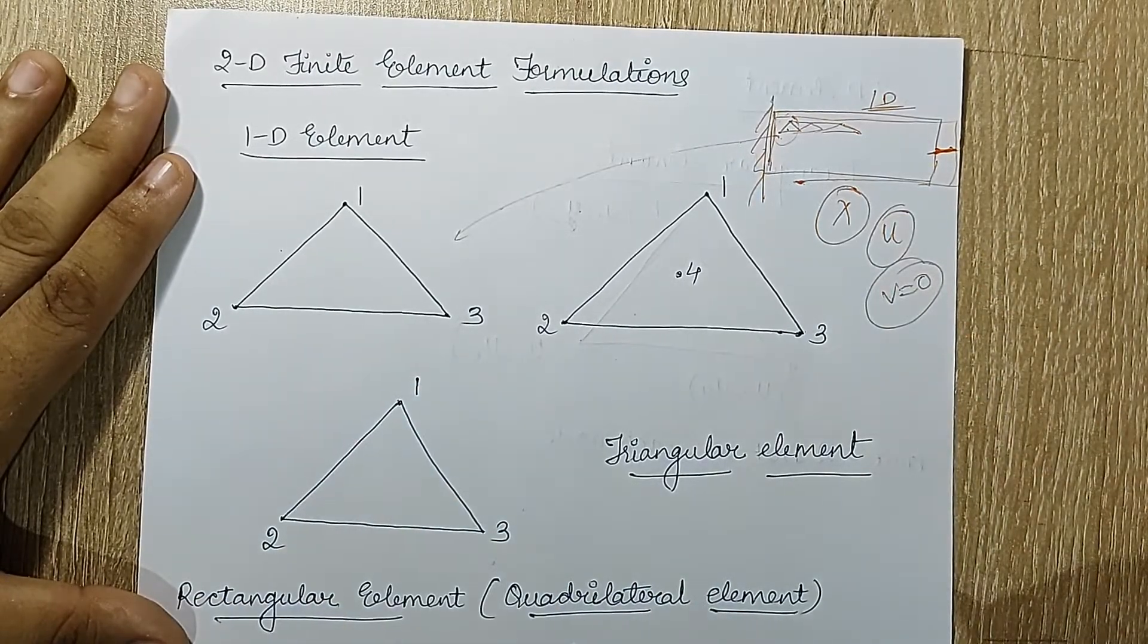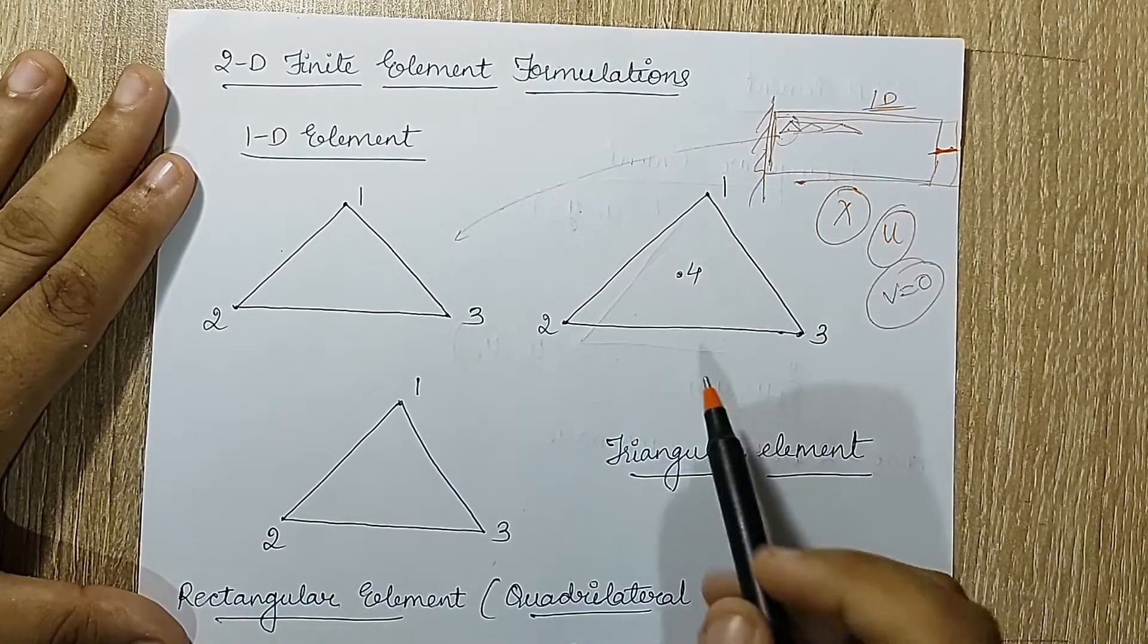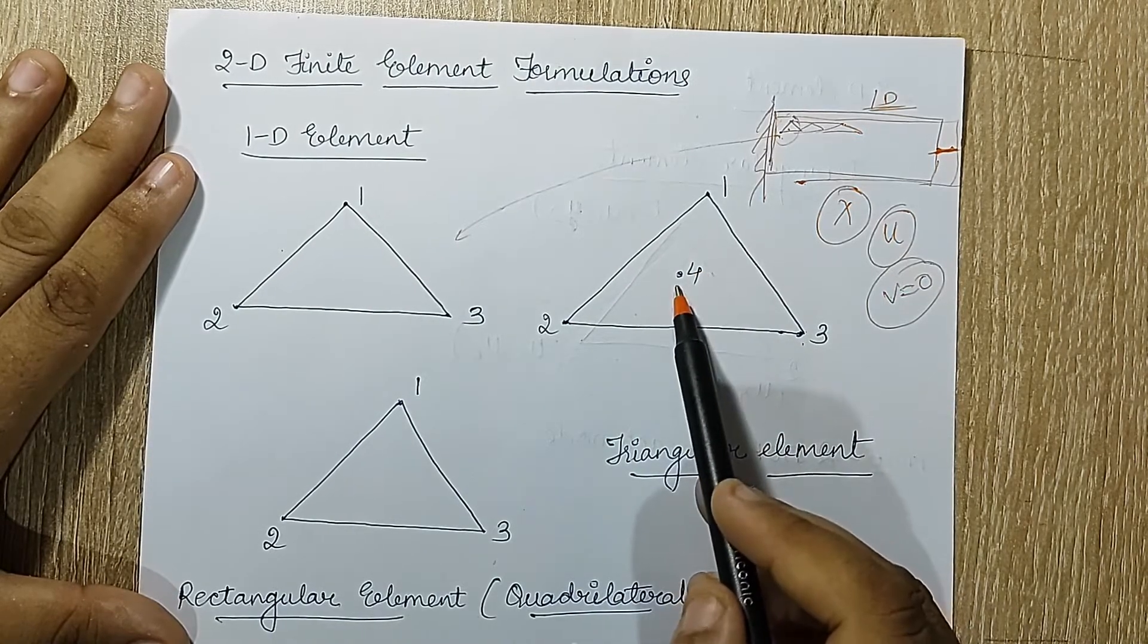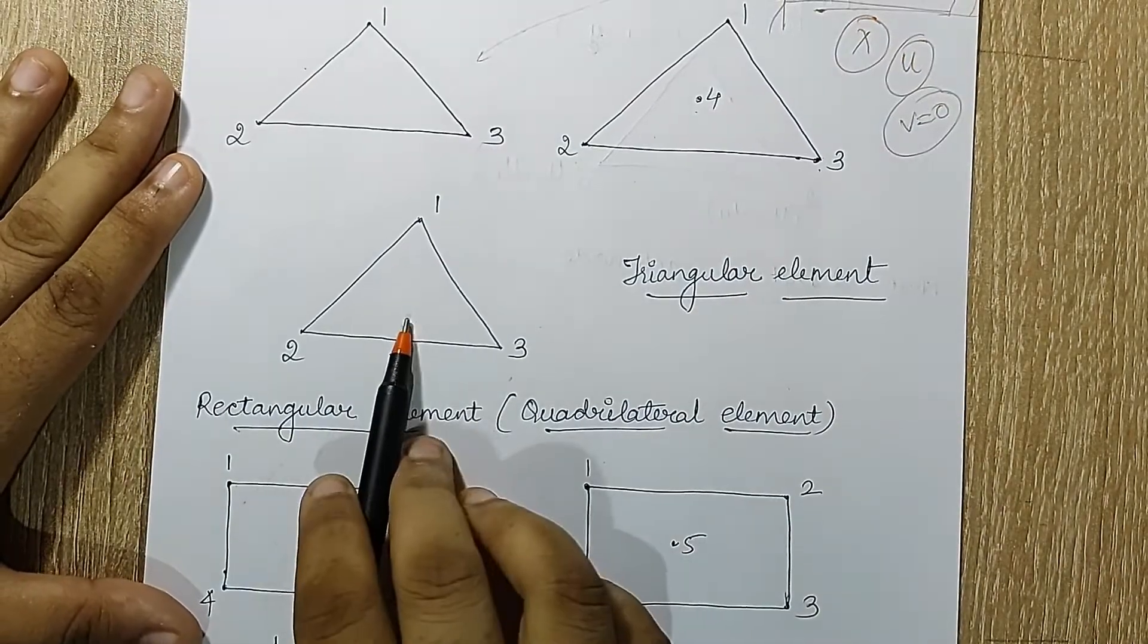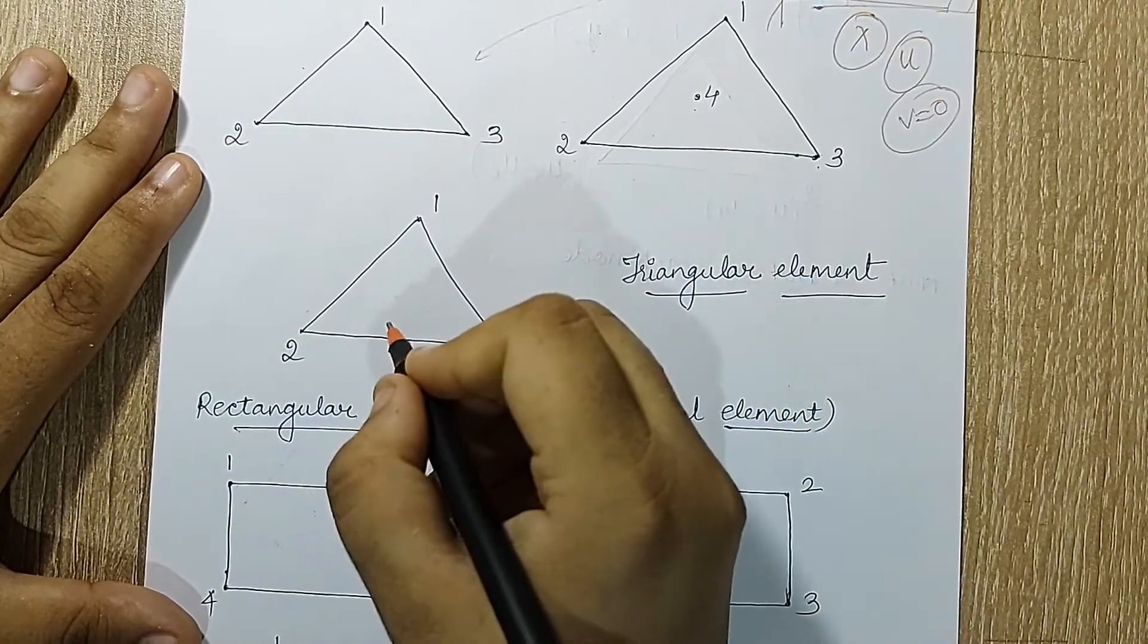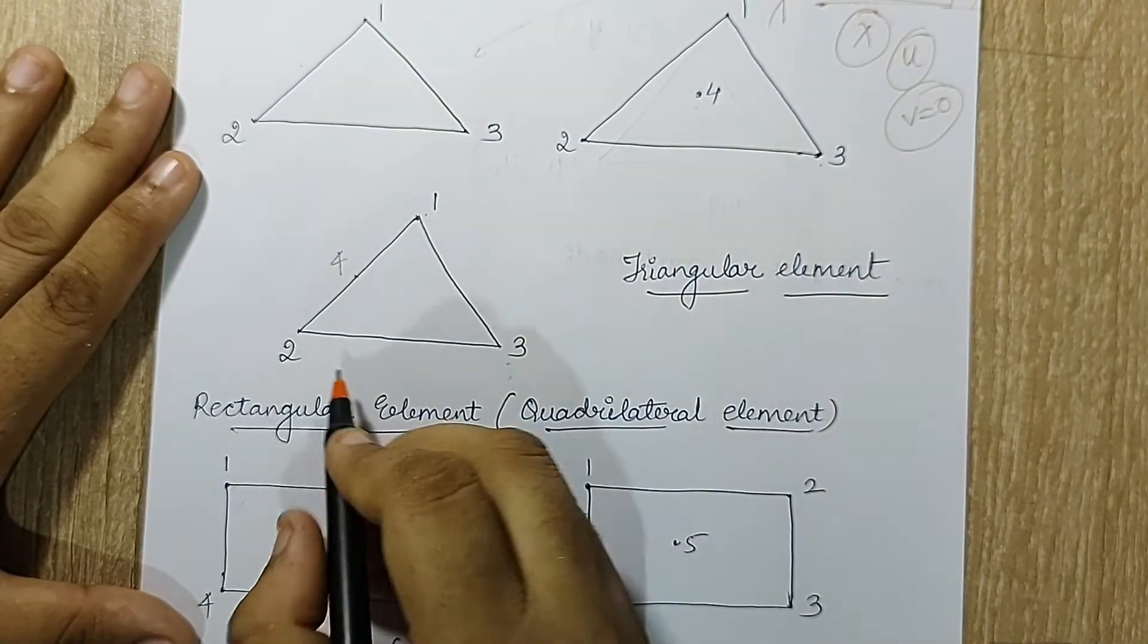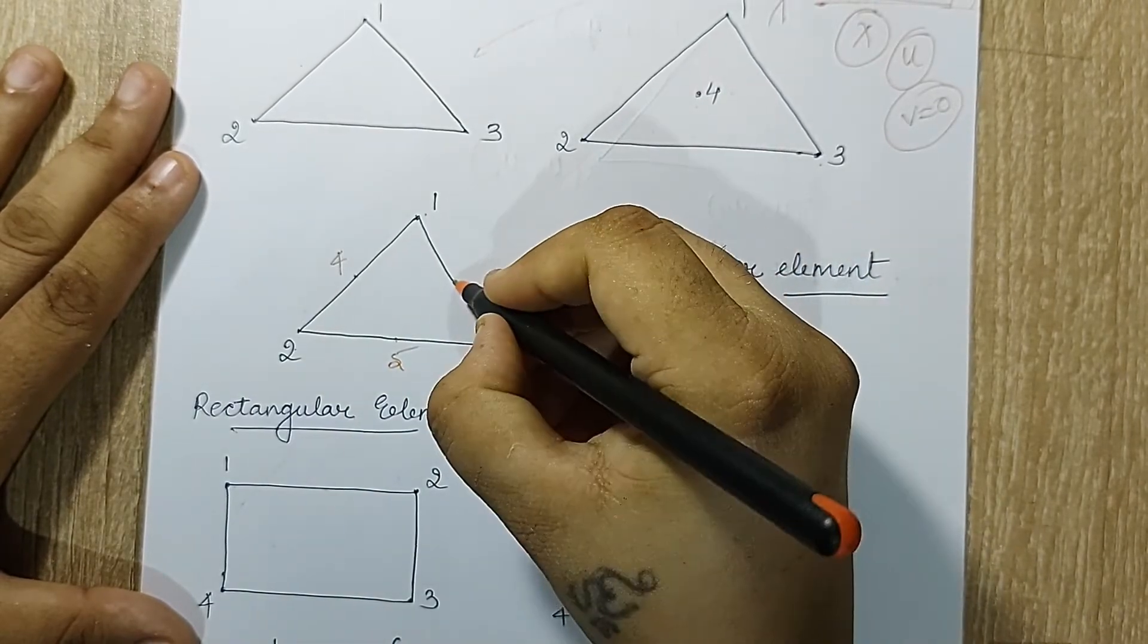Now suppose if I have a triangular element as you're seeing here. Instead of three nodes, if I want to mark another node, I can mark the node here at the center. Apart from these, you can also have a triangular element with three nodes here. Let me mark another node which is four, which is between one and two. I want to mark another node which should be between two and three, which is five, and then last, again here, which is six.